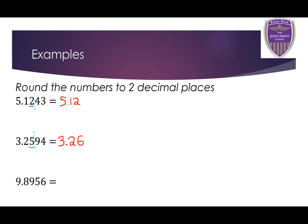Last example: 9.8956. The second decimal place is the 9, so I draw a line after it. Be careful — the number after the 9 is 5, which is obviously 5 or bigger, so that's going to make the 9 round up. But because the 9 rounds up to 10, we have to add 1 to the next number. So the 9 turns into a 0 and we add 1 to the 8, giving us 9.90. Because we're rounding to two decimal places, you must include two decimal places in your answer even if one of them is a 0.